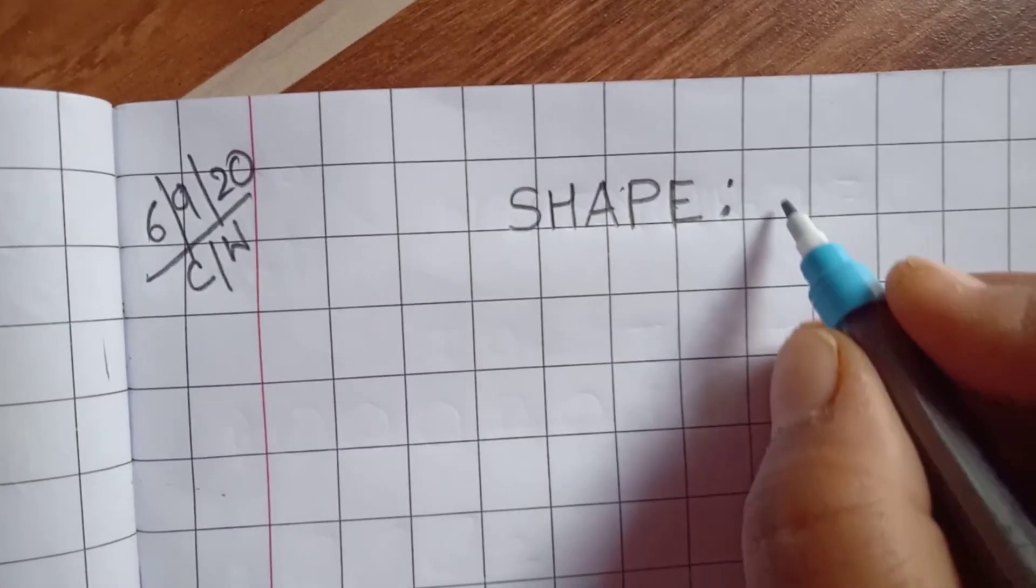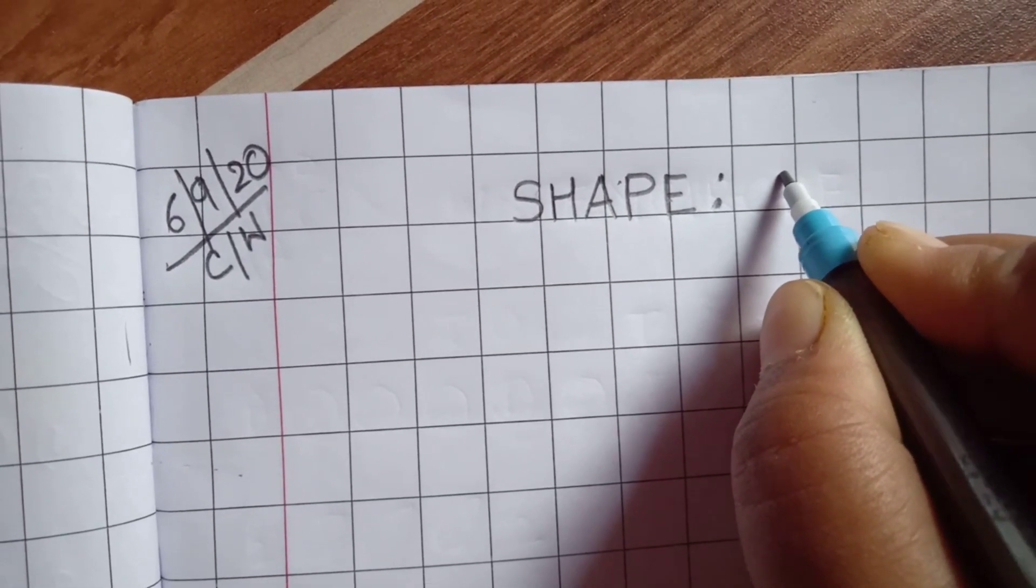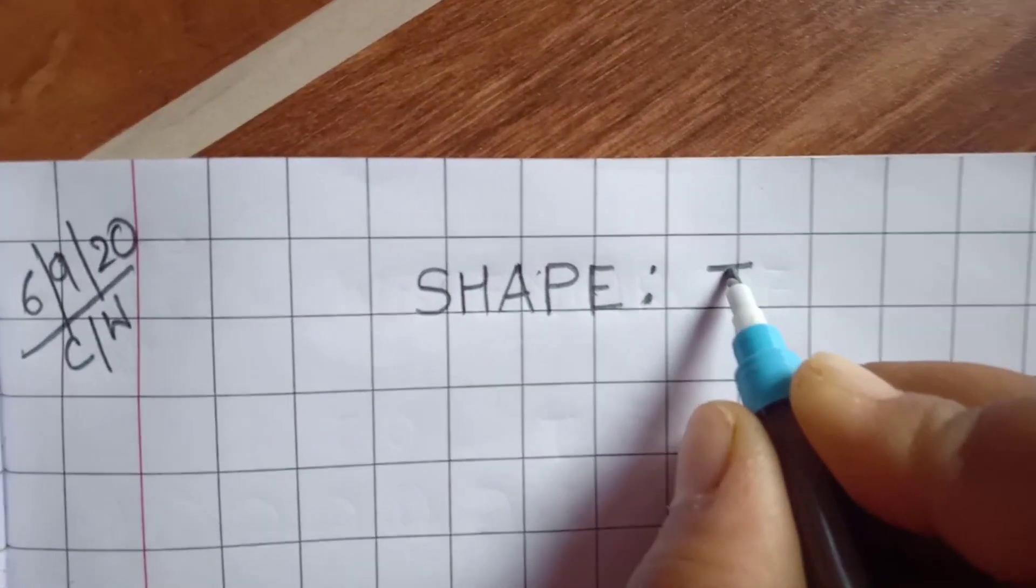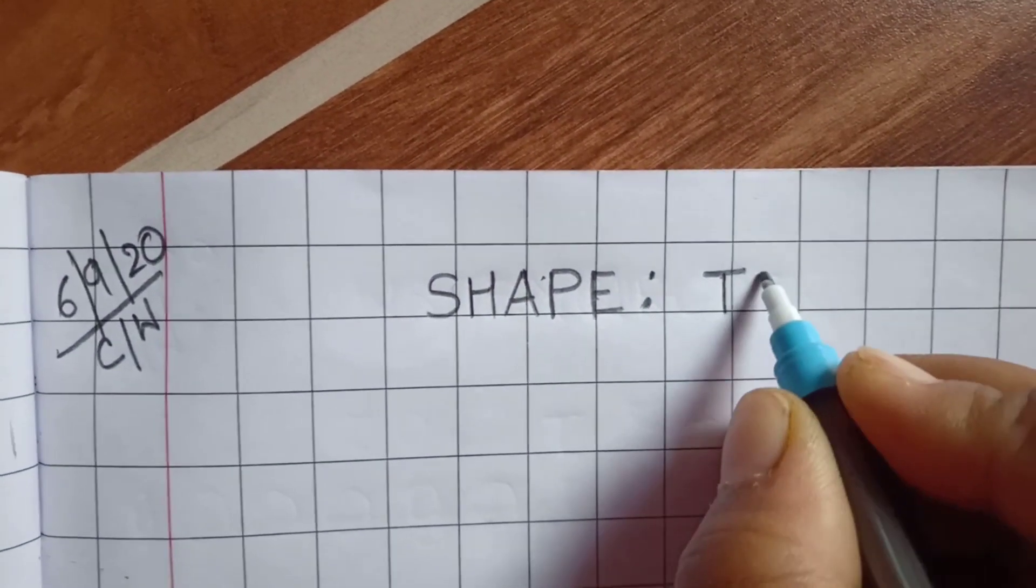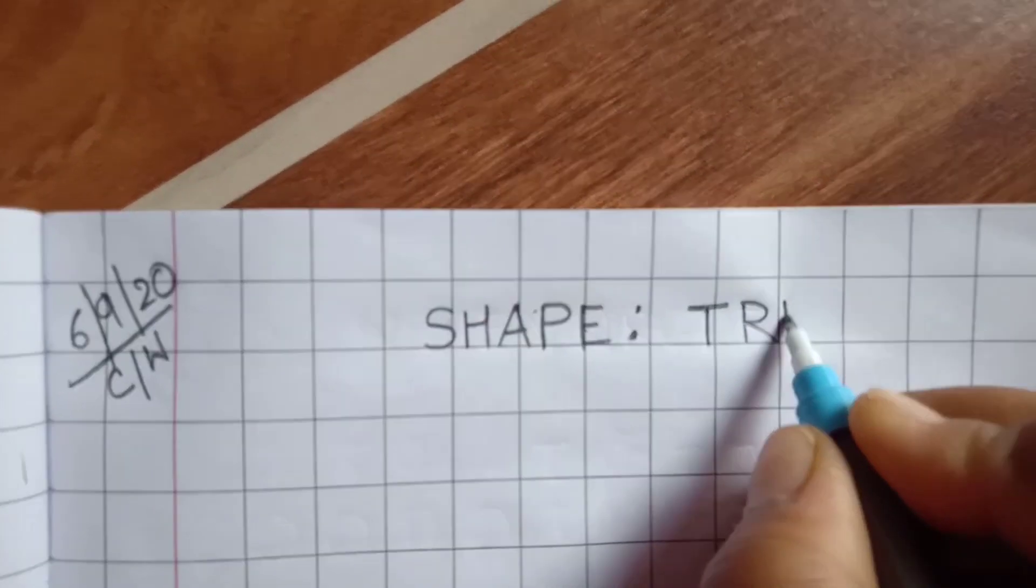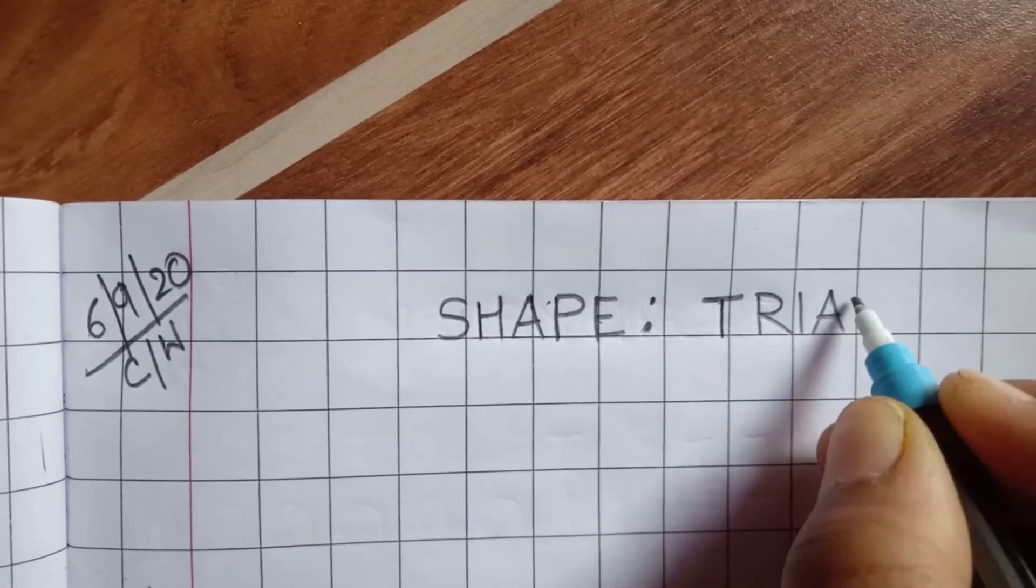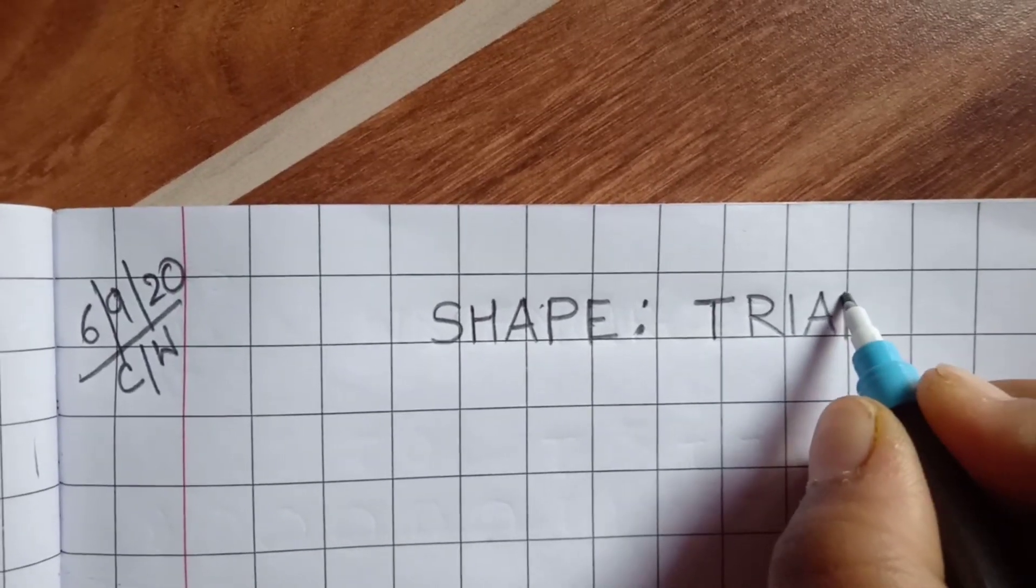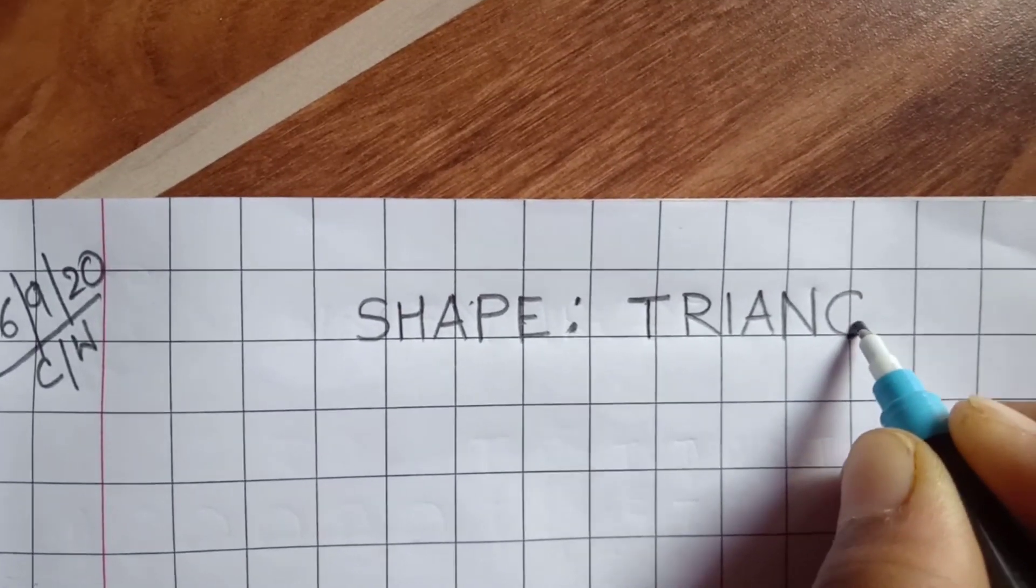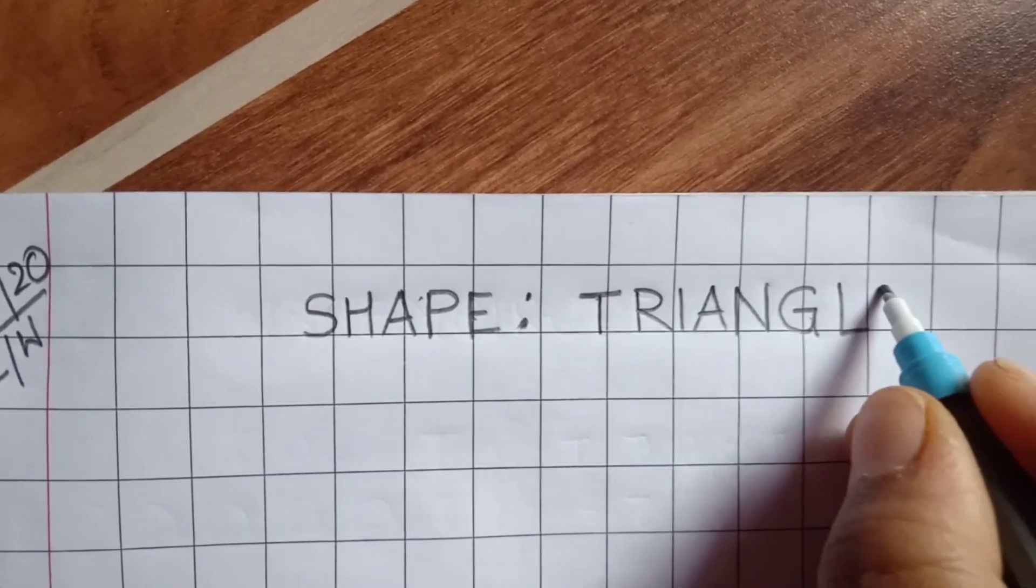Give two dots and then we will write here which shape? Triangle. So we will write here T, R, I, A, N, G, L, E.